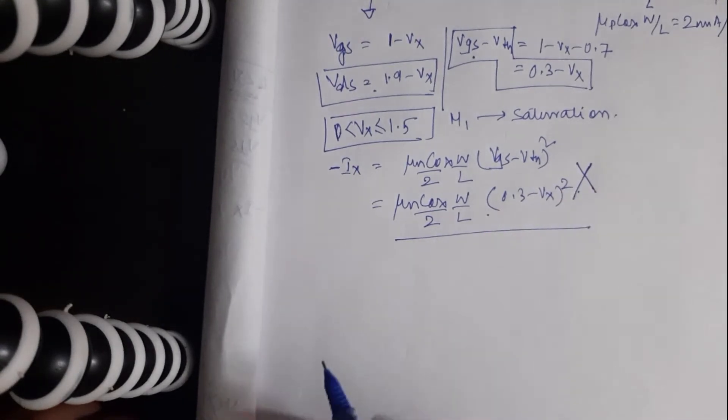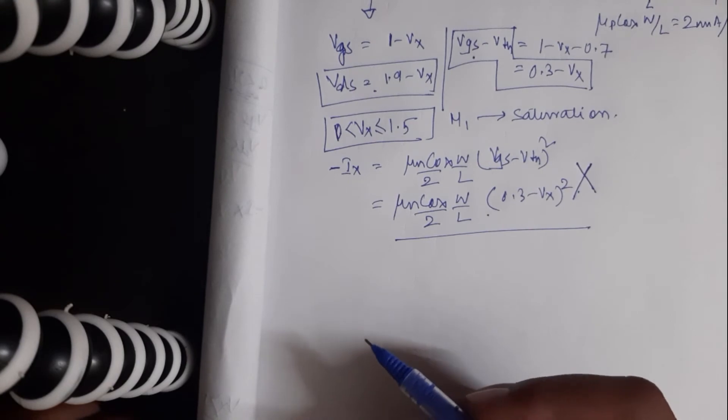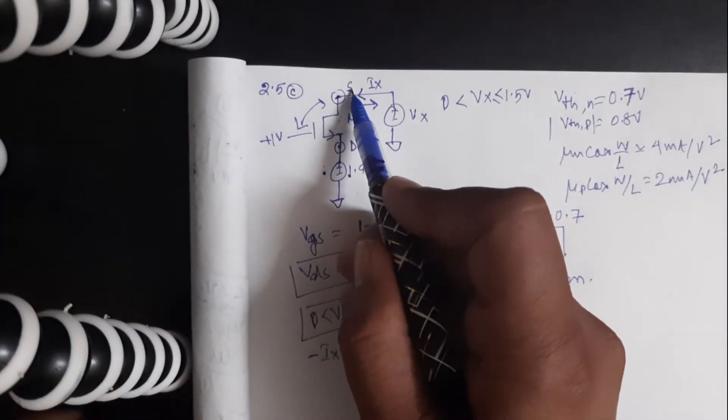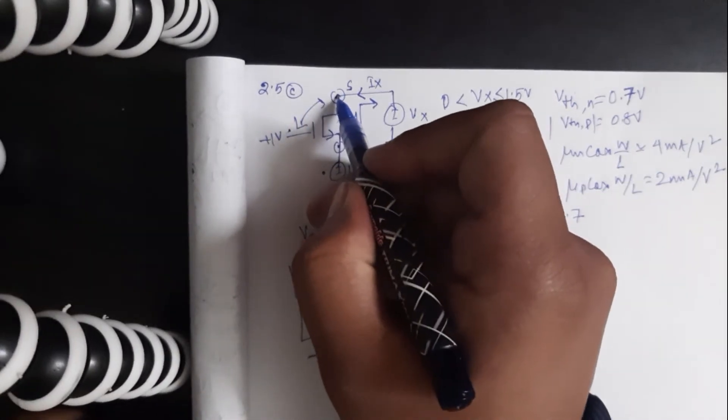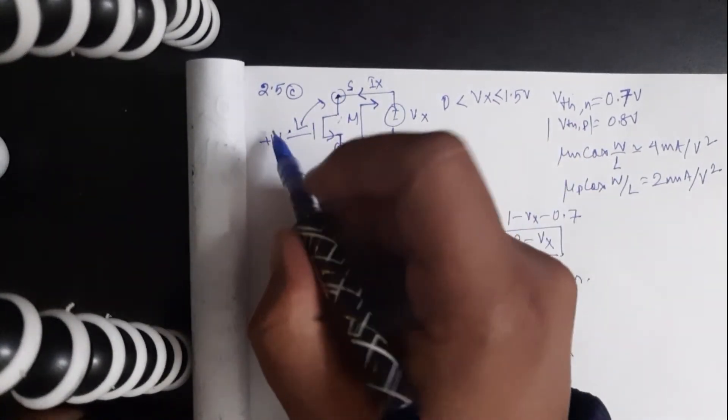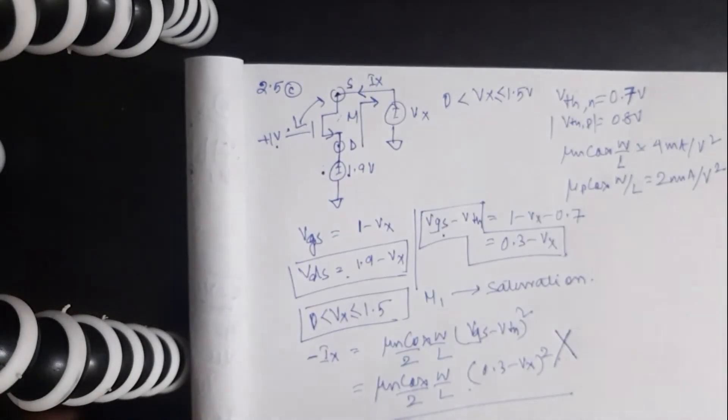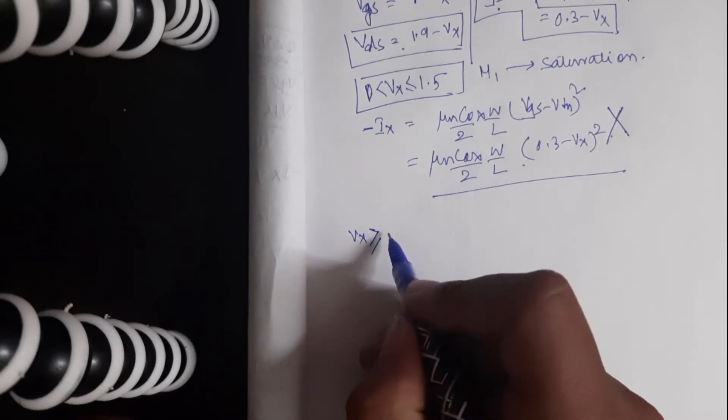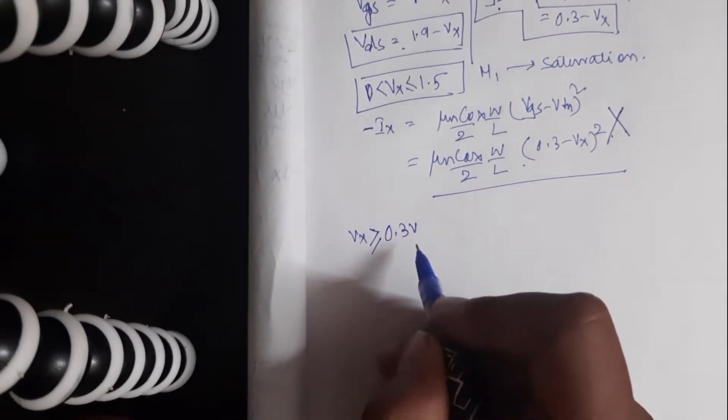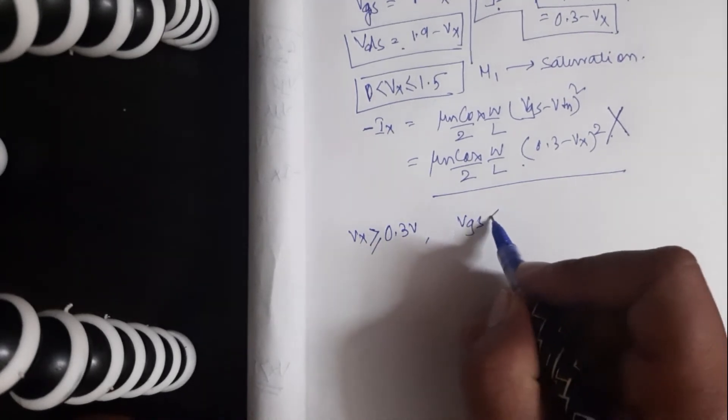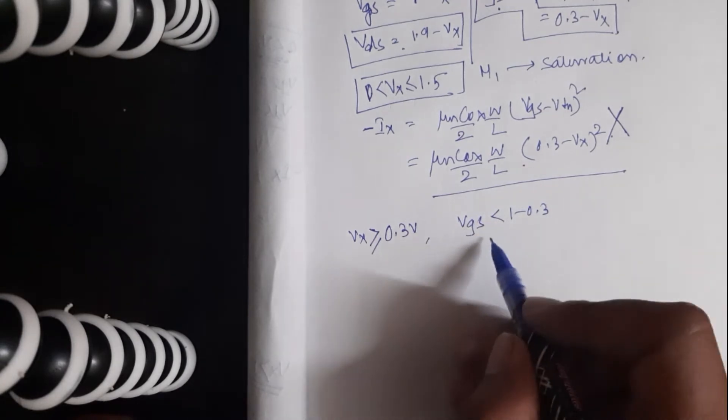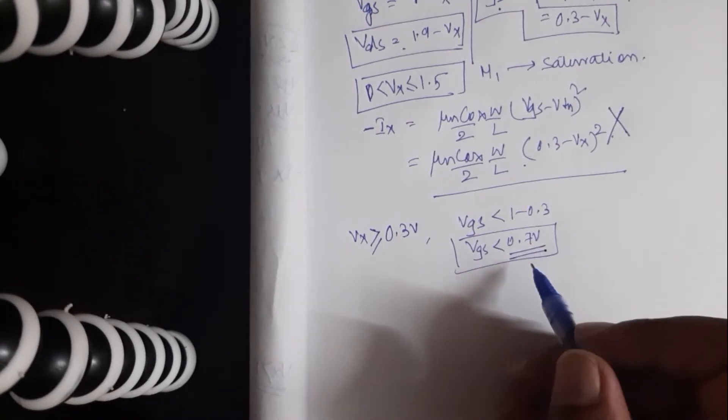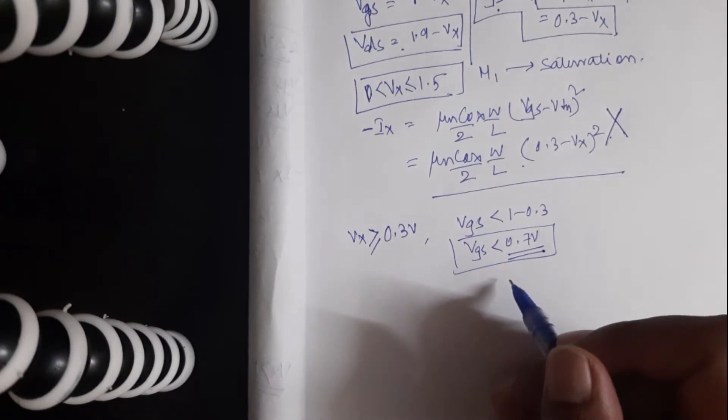It is quite amusing that we can overlook some of the facts right off the bat, the most important of which is: since this is our source and this is our gate, the source cannot go beyond gate voltage minus the threshold voltage. So if VX is greater than 0.3 volts, that means VGS is less than 1 minus 0.3, which means VGS is less than 0.7 volts. What is this 0.7 volts? This is our threshold voltage. And what happens when gate to source voltage goes below the threshold voltage?